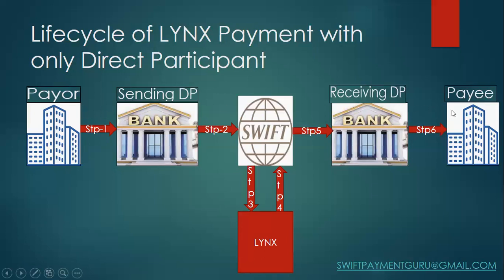They want to make a transfer to pay some amount in Canadian dollars. They use any of their net banking channels and then send out this payment information to their account-holding institution — that is, their sending institution, which is the direct participant in LYNX. There could be a case where they do not have a direct participant; in that circumstance they need to go through an indirect participant of LYNX, which must have a relationship with a direct participant.